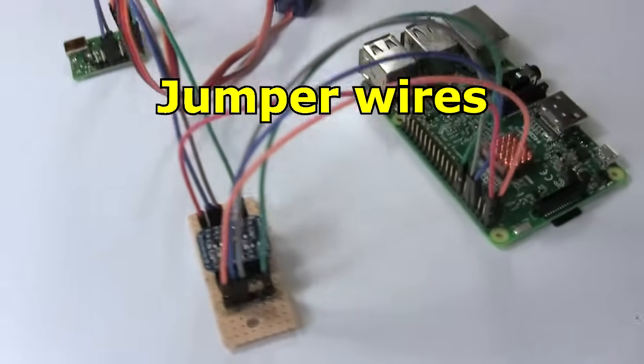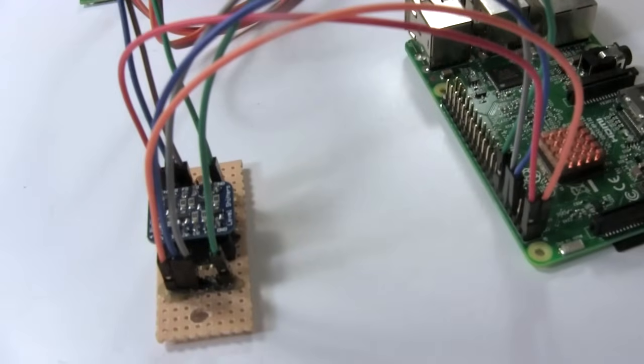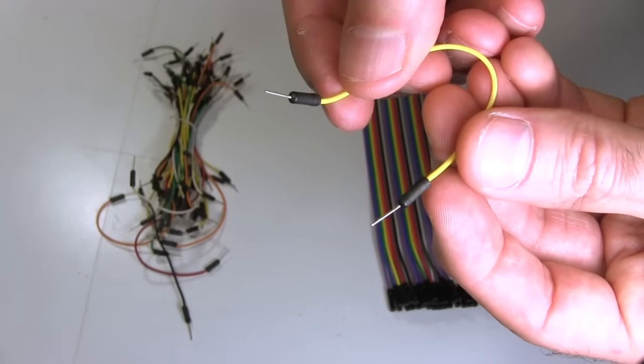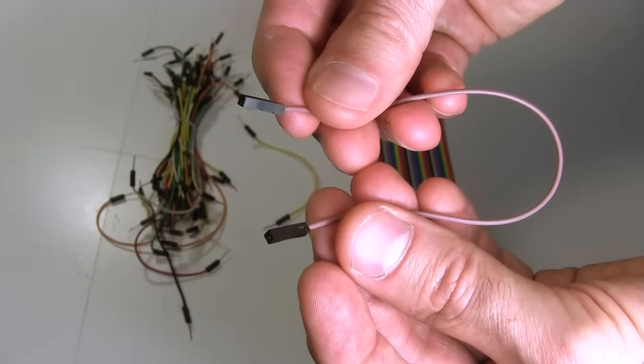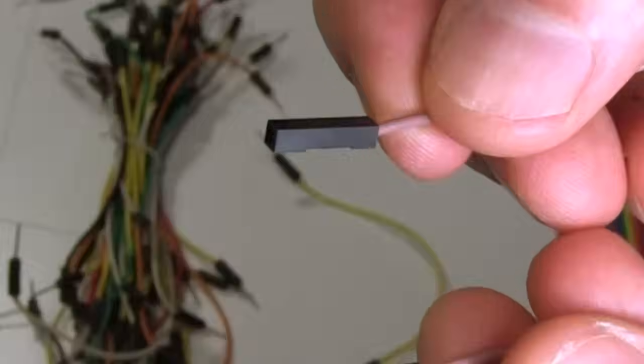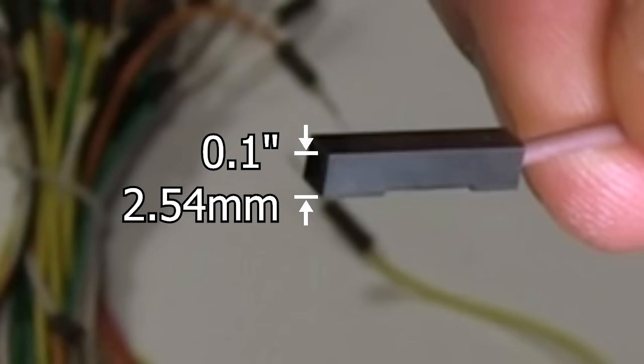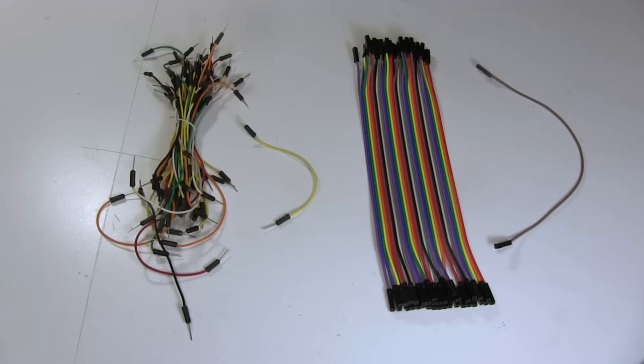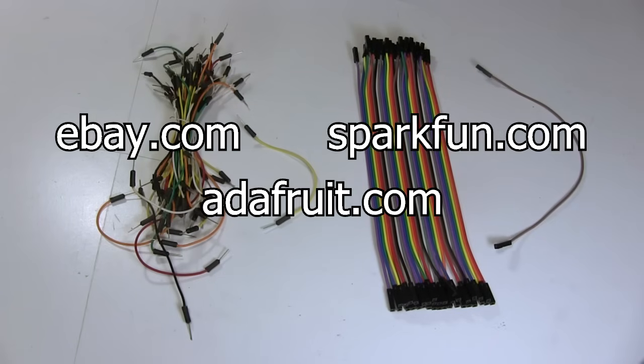Besides plugging boards into headers, you can connect things together using jumper wires. You can buy jumper wires with male, or female connectors, or a mix of both. These are 0.1 inch wide, and have 28 gauge wires. You can buy these online at the usual places, such as eBay, Adafruit, SparkFun, and so on.